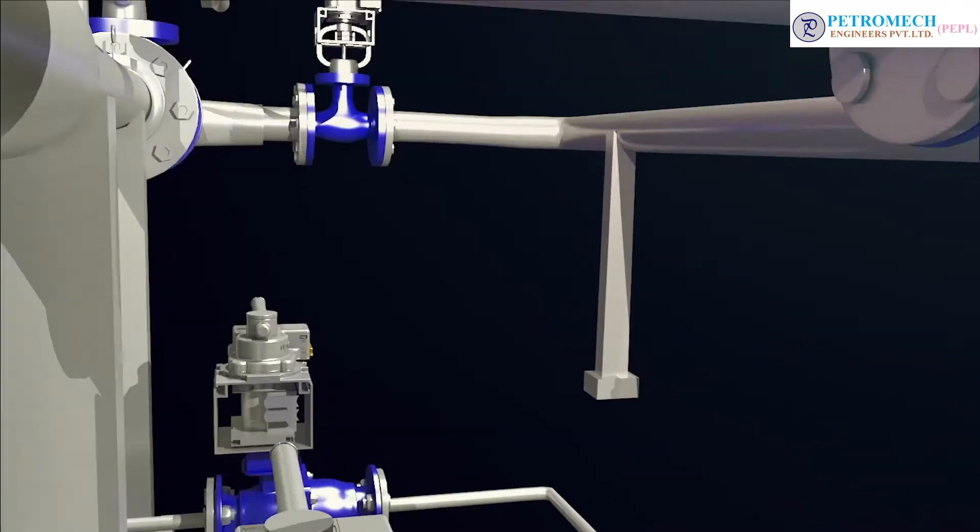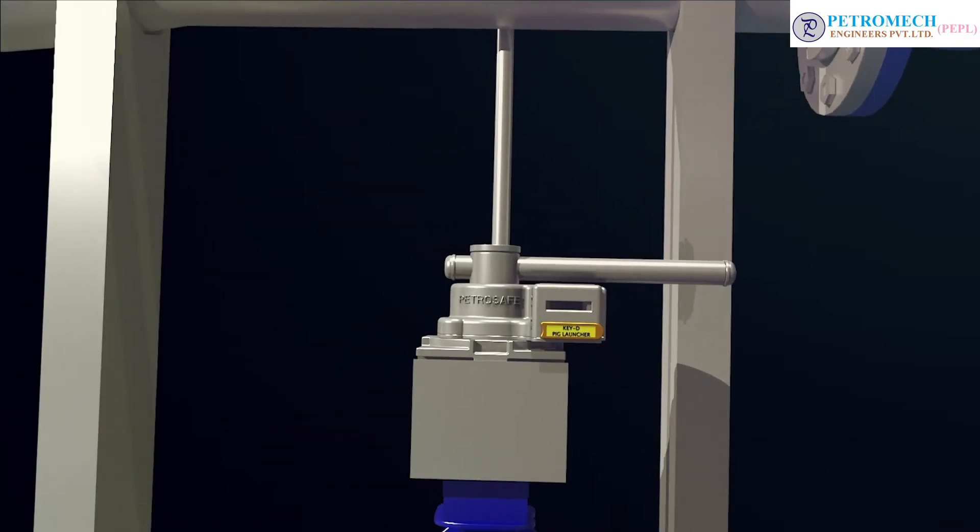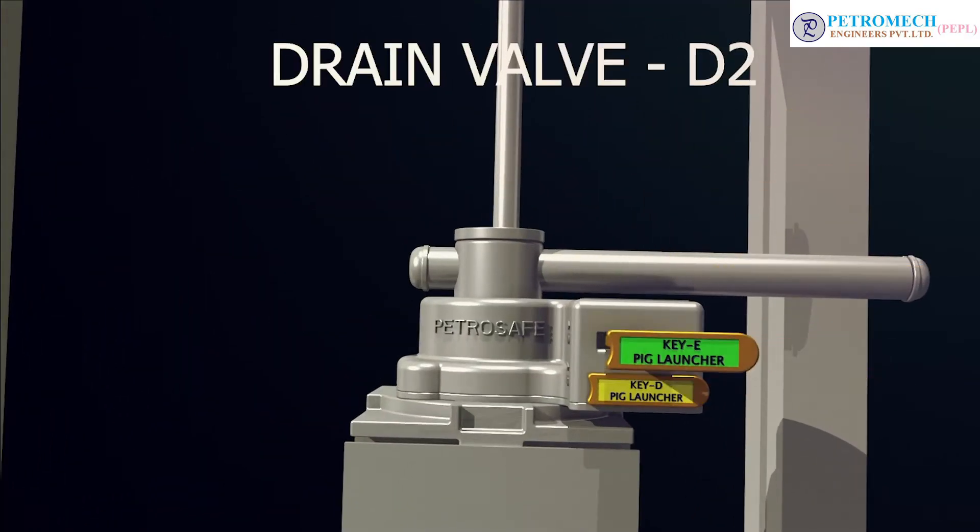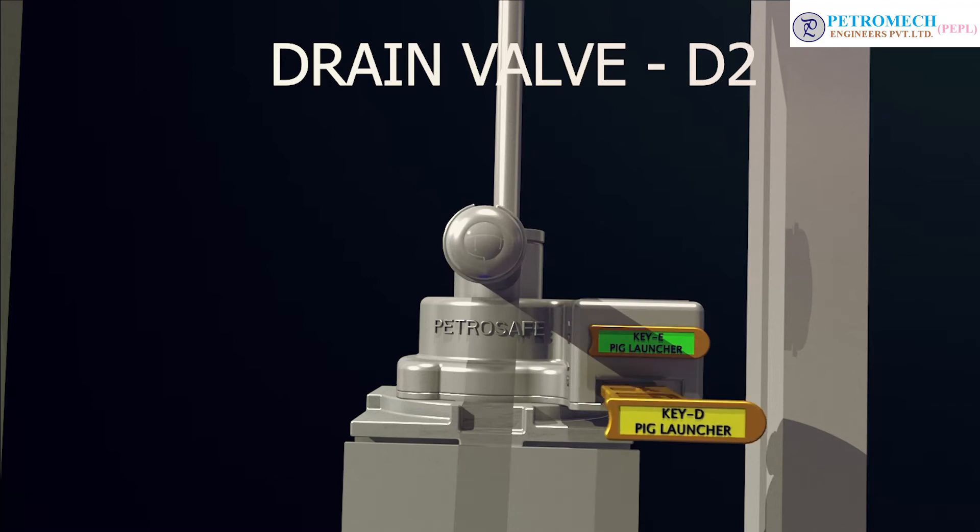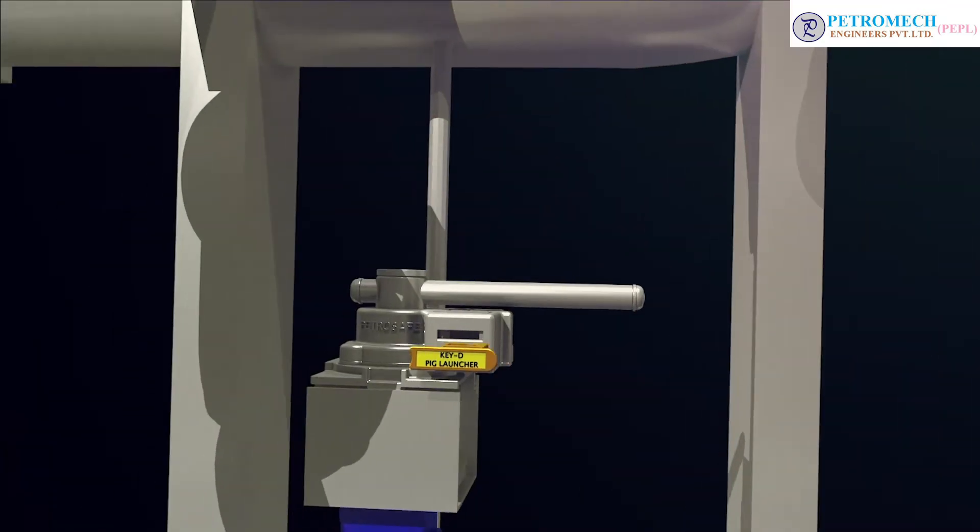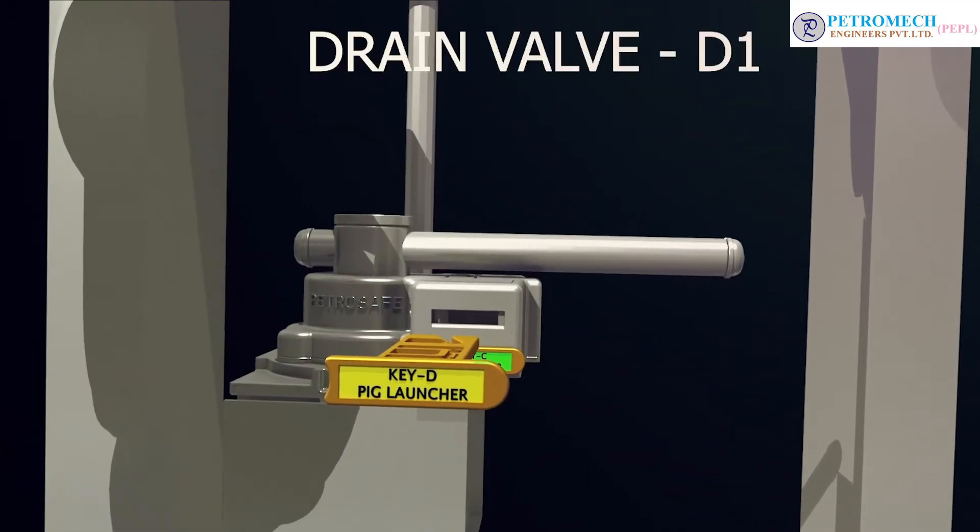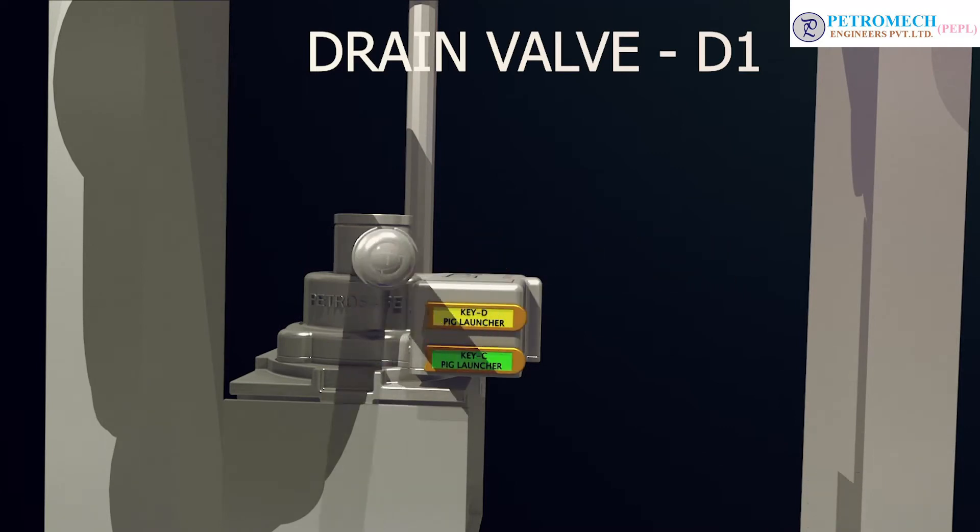Step 11: Insert key E into drain valve D2 and close the valve by releasing key D. Step 12: Insert key D into drain valve D1 and close the valve by releasing key C.